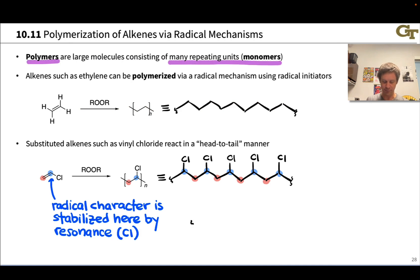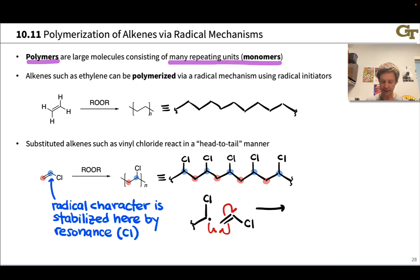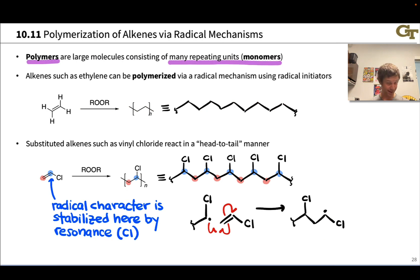Without getting too deep into the mechanism, the growing chain of the polymer has a radical on the end. To add another equivalent of the monomer, a monomer molecule arrives and we get a radical addition to the pi bond. The radical addition occurs regioselectively such that radical character ends up adjacent to the chlorine in the new monomer. We've lengthened the chain by two carbons, and it's the carbon connected to the chlorine on the end that has the radical character. This continues over and over again until a termination event — such as coupling of two radicals or hydrogen abstraction — shuts down polymerization.